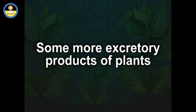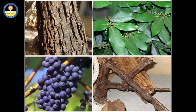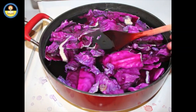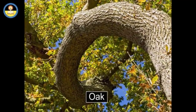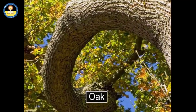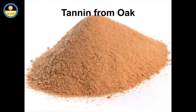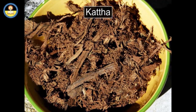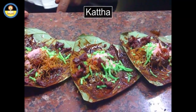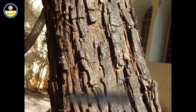Some more excretory products of plants. Tannin: in certain plants, parts including bark, fruit, leaves, and roots secrete color-imparting chemicals. Usually these are polyphenolic in nature and are used as dyes and inks. In the oak tree, a type of tannin is stored in the bark and woody part of the trunk, making the wood appear dark; it yields a yellow-brown color used for dyeing fabric. Kattha, which gives red color and typical flavor to paan, is extracted from the heartwood of the Acacia catechu plant.